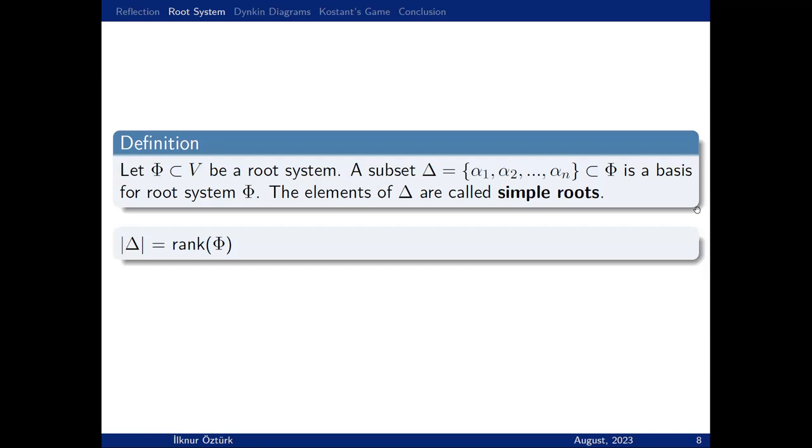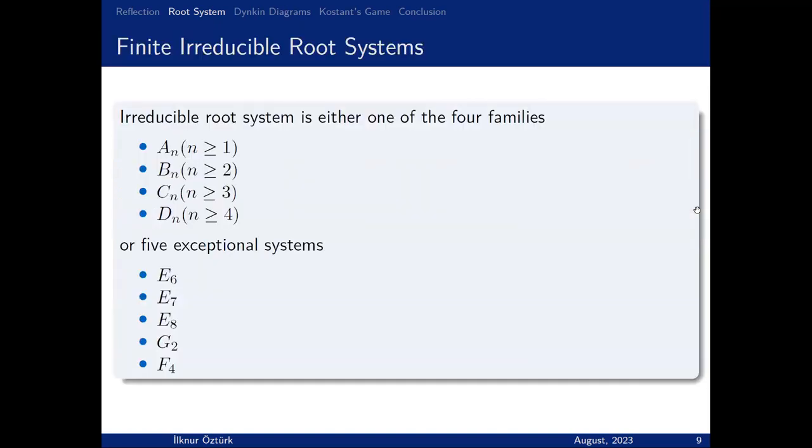In this root system, some of them are special. We call them simple roots. Simple root is a basis for a root system. What I mean by that: the vectors of the root system can be written as a linear combination of simple roots. Simple roots must be linearly independent, and the cardinality of simple roots equals the rank of V.